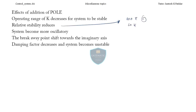The system becomes unstable, and the rise time also decreases. For an undamped system the rise time is very very low — it will rise immediately. So the addition of poles into the system is summarized with these effects.